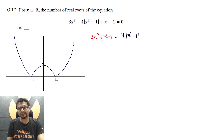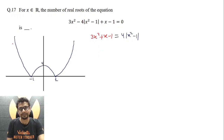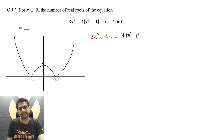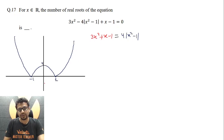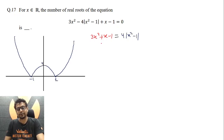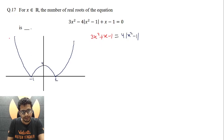Now let's plot the left-hand side: 3x² + x - 1. Compared to the right-hand side, the left-hand side will decrease less steeply, and on the other side it will also increase less steeply. At x = 0, it is -1. At x = -1, it is positive. At x = 1, it is also positive. The x-coordinate of the vertex will be -b/2a, so it becomes -1/6.